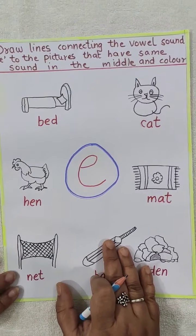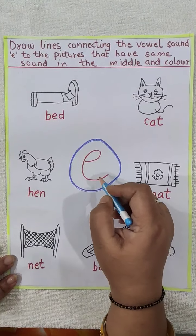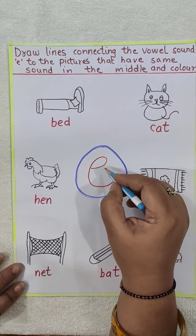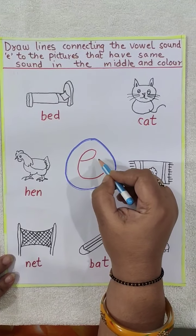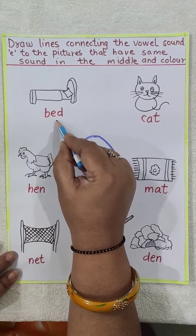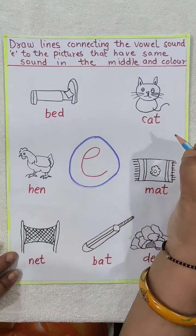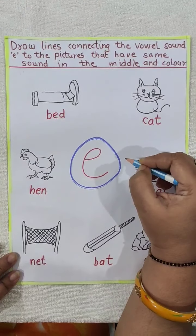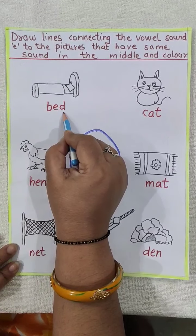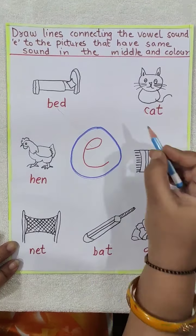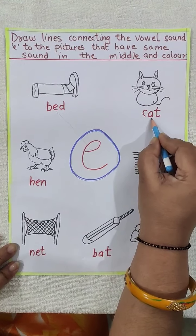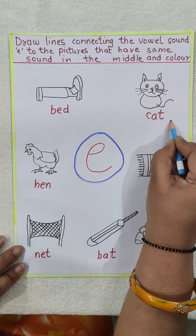Here is another worksheet. Here in the middle, small 'e' is written. We are learning and practicing E sound words. We will see in which word 'e' is coming in the middle. We will match that picture. B-E-D, bed — e is in the middle, so we will match it with e. C-A-T, cat — e is not here in the middle, so we will not match it.